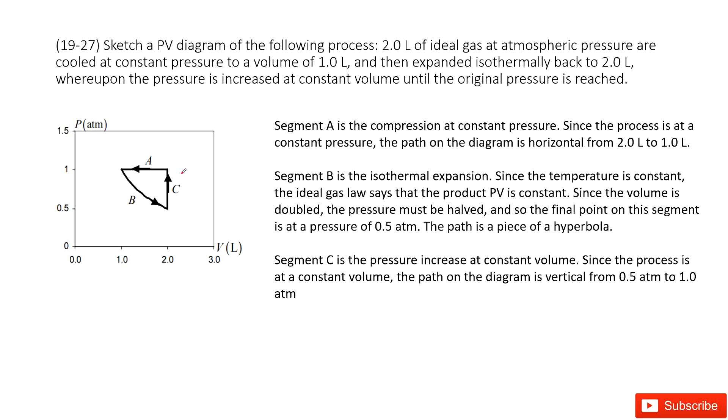In this part, we need to plot the PV diagram for these temperature changes. We can see part 1 is 2L of ideal gas at 1 atm pressure, cooled at constant pressure to 1L.